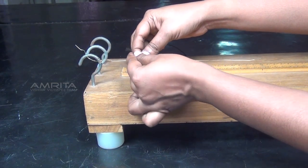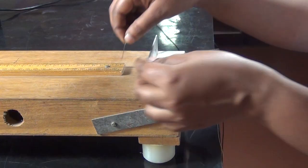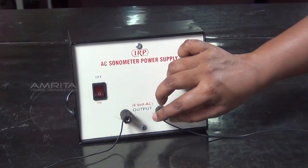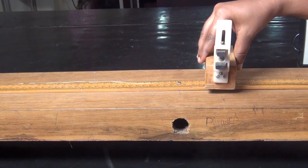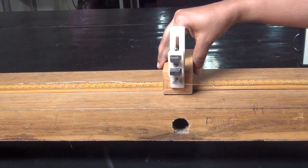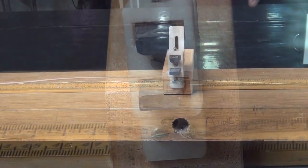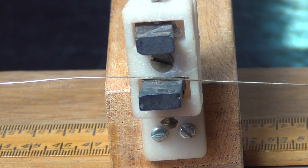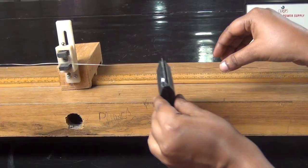The sonometer wire is connected to the secondary of the step-down transformer. The horseshoe magnet is mounted at the middle of the sonometer bed so as to produce a magnetic field perpendicular to the wire. The opposite poles of the magnet must face each other.